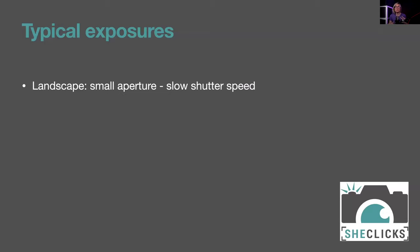Looking at typical exposures by genre: for landscapes, you typically want a small aperture for lots of depth of field — sharp foreground, mid-ground, and background — which means a slower shutter speed. That's generally fine since landscapes don't move, though if you have waving barley you may need to decide to freeze or blur it. If using a slow shutter speed, put the camera on a tripod. A tripod also slows you down and makes you think more about composition. Generally for landscapes: small aperture, slow shutter speed, low ISO.